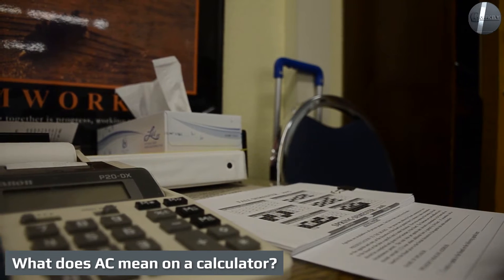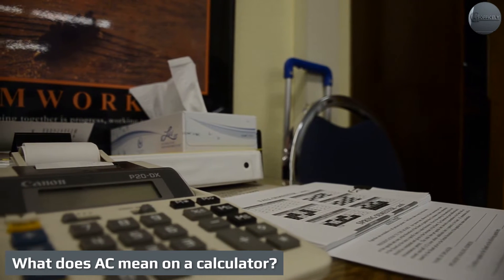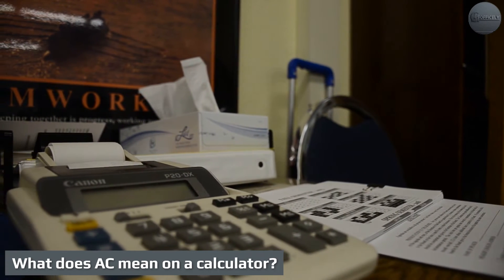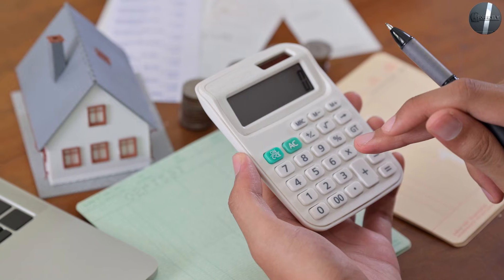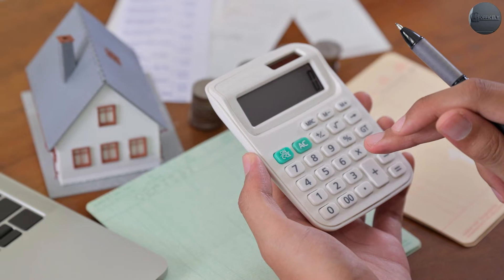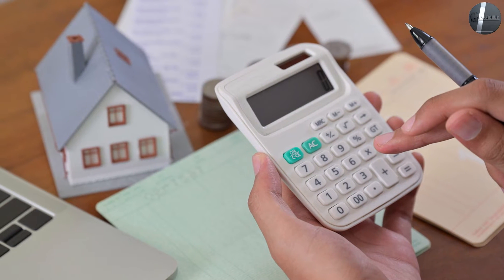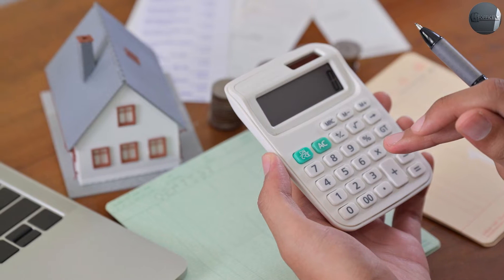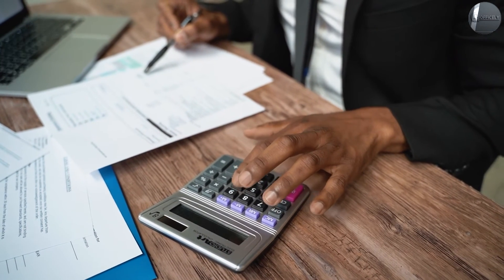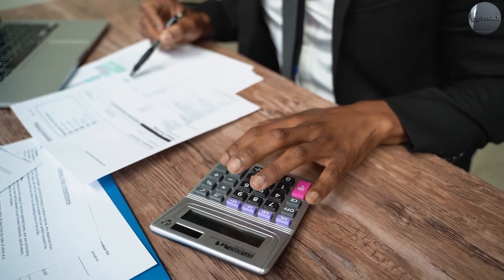What does AC mean on a calculator? AC stands for All Clear and basically does the same thing as C. Some calculator brands just label the buttons differently. However, AC might be easier to understand and see because using the word 'all' could be used as an indicator that everything is being erased, not just what is currently on the screen.